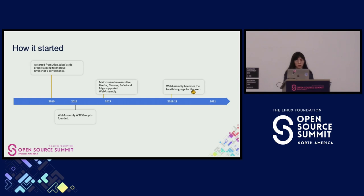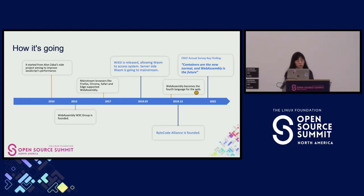So how WebAssembly was started: in 2010 it began as a side project used majorly in the browser. Five years later the W3C WebAssembly group was established, and another four years later WebAssembly became the fourth standard for the web — a big milestone. Also, WASI was started in 2019. WASI is the standard that helps WebAssembly talk to a system — it stands for WebAssembly System Interface and allows WebAssembly to access system resources.